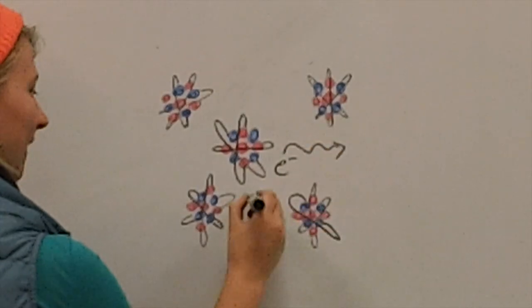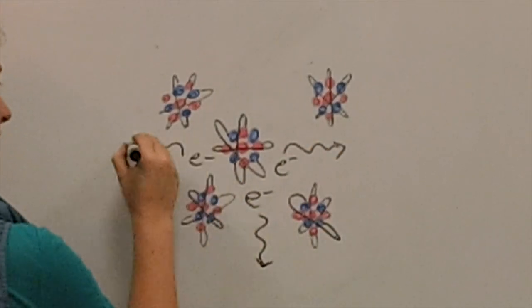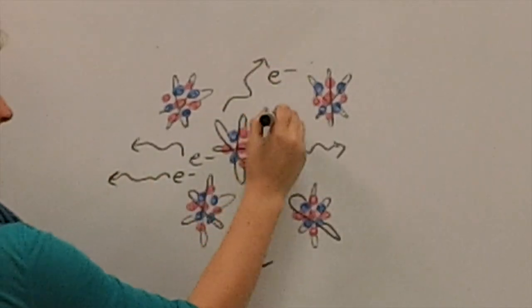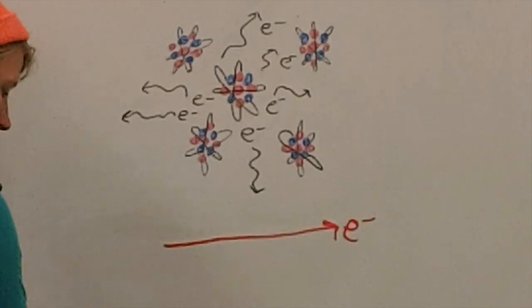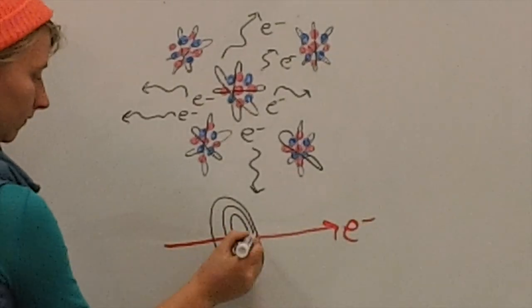Iron atoms form metallic bonds where the electrons are shared between atoms and move freely in an electron sea. These moving electrons can create a magnetic field. This is similar to what we saw before with a charge moving through a wire.